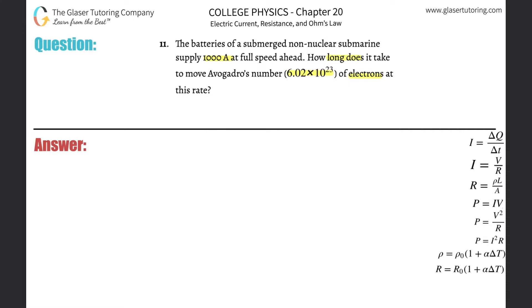Remember, anytime you know the number of electrons, you can always find the amount of charge associated with that number of electrons. Why? Because we know that every single electron has a charge value of 1.6 times 10 to the minus 19 coulombs. I know it's negative, but we're just concerned about the magnitude here.